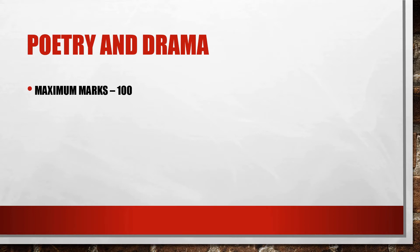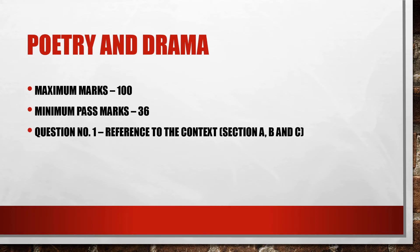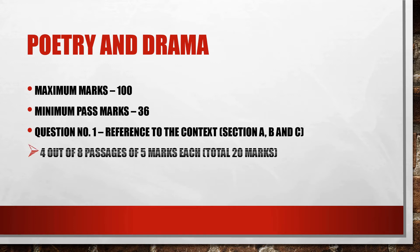The paper is of 100 marks and minimum pass marks are 36. There will be three types of questions asked. Question number 1 will be reference to context, and from all three sections — Section A, B, and C — extracts will be taken. Students will be asked to attempt reference to context: 4 out of 8 passages of 5 marks each, totalling 20 marks.